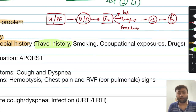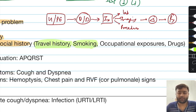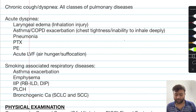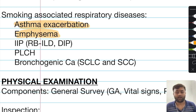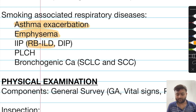Travel history is of primary importance because it is associated with Mycobacterium tuberculosis exposure and can lead to tuberculosis in a susceptible individual. Smoking is a very important recreational exposure that predisposes to a variety of respiratory diseases. You should remember five important diseases linked with smoking: asthma exacerbations, emphysema, and idiopathic interstitial pneumonia, specifically the two smoking-related ILDs — respiratory bronchiolitis-associated interstitial lung disease and desquamative interstitial pneumonitis.